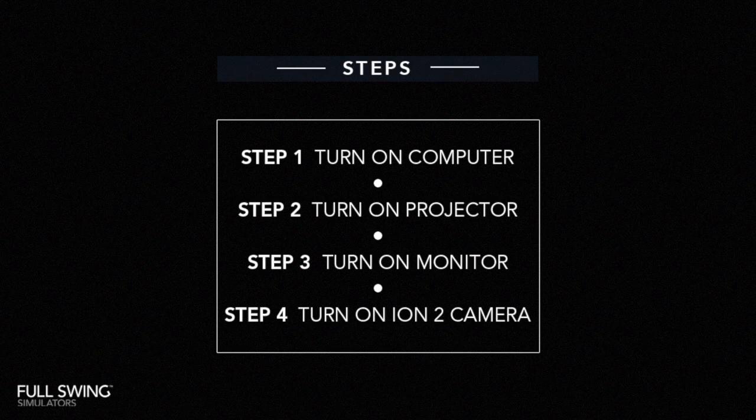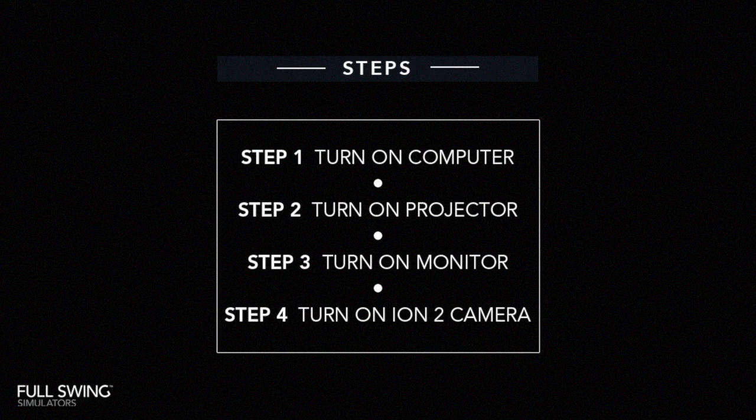In summary, there are four main steps to powering on your Full Swing simulator: the computer needs to be turned on, the projector, the touchscreen monitor, and the ION-2 camera. Note that the majority of our simulators have an ION-2 camera that automatically turns on with the system and will not require the user to use a remote.